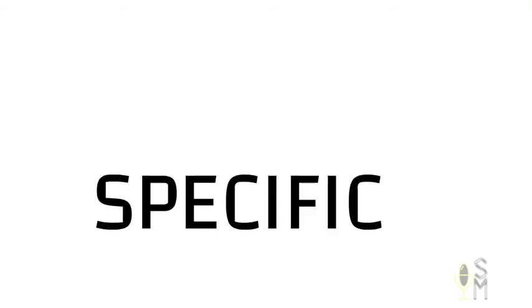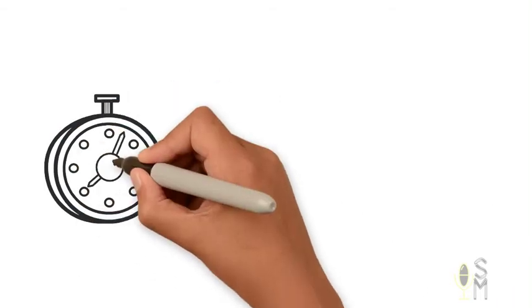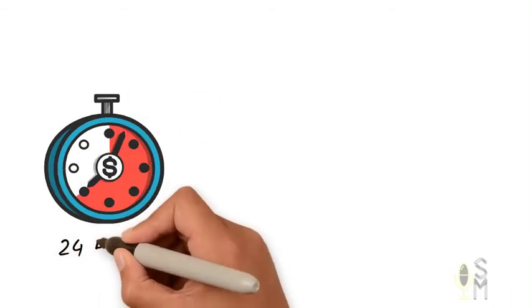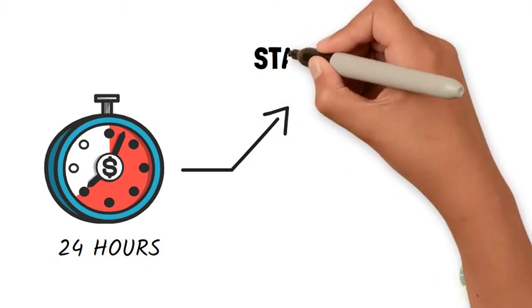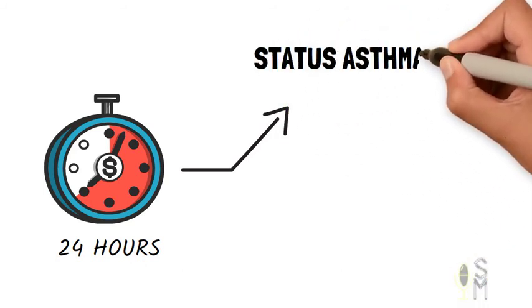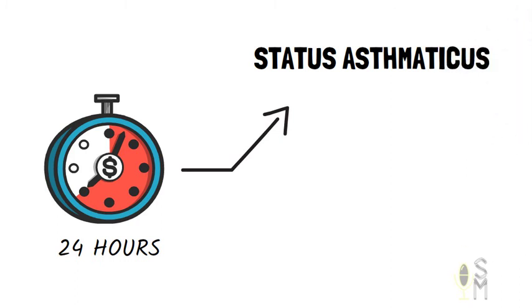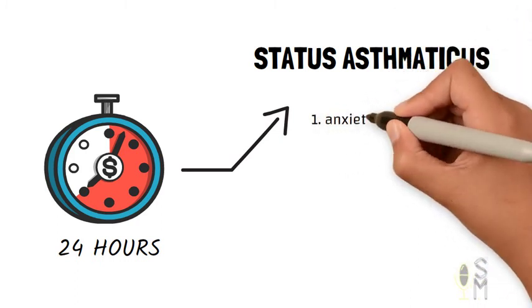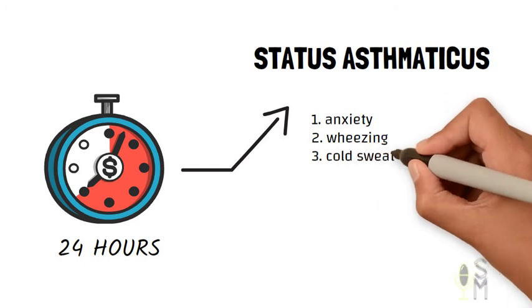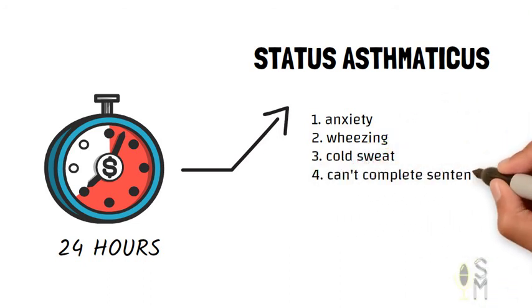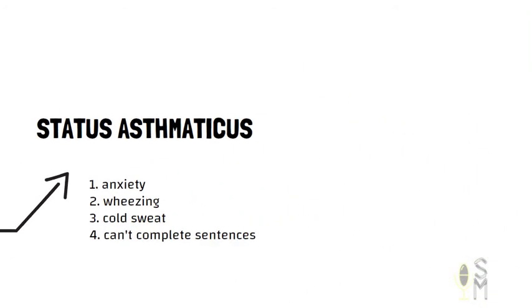Patients should be rushed to the hospital if the attack doesn't subside within 24 hours after administering the relievers, because chances are it has become acute severe asthma, which is called status asthmaticus. Symptoms such as anxiety, wheezing, cold sweats, and difficulty in completing sentences can be seen in these patients.